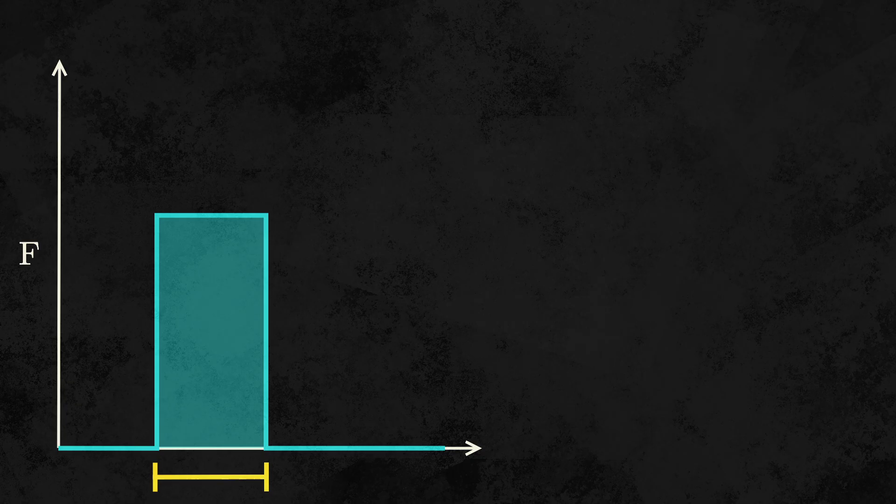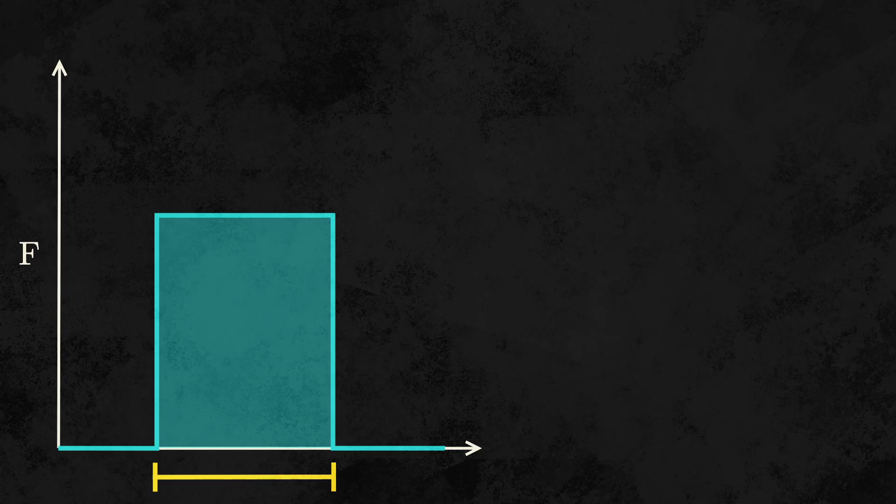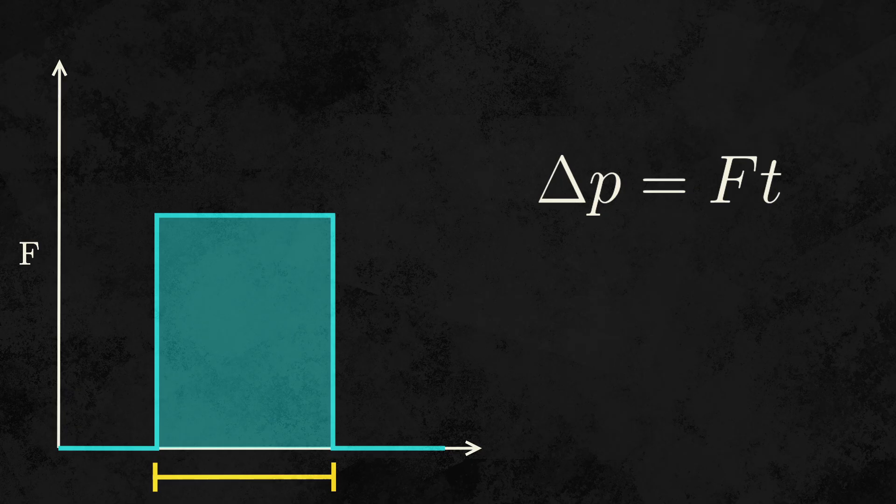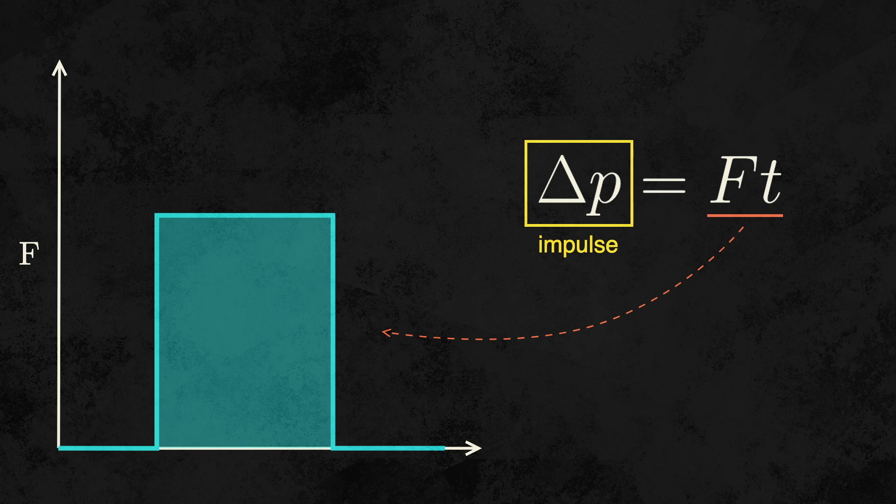If the same amount of force is exerted onto an object for a longer amount of time, it'll lead to a bigger change in that object's behavior. Thus, we multiply force with time to get impulse, which measures the entire effect of the force on the object. Thus, the area under a graph of force with respect to time will be the impulse exerted.